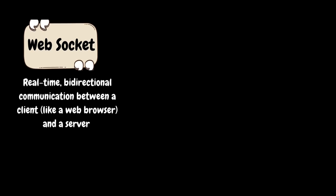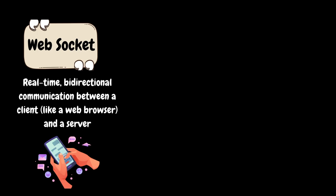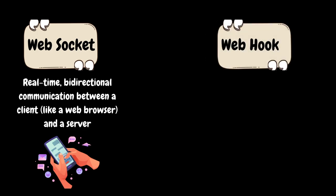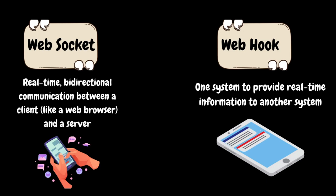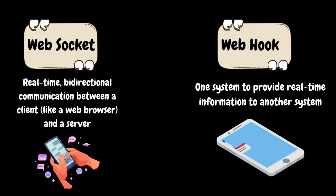Next is WebSocket, a communication protocol that enables real-time bi-directional communication between a client like a web browser and a server over a single long-lived connection. Unlike traditional HTTP, which involves separate requests and responses, WebSocket allows data to be sent and received by both the client and server at any time. Imagine chatting with a friend in real-time — in traditional HTTP, you send a message and your friend receives it when they refresh the page. WebSocket is like instantly exchanging messages without refreshing, creating a smooth continuous conversation. Finally, we have webhooks — a way for one system to provide real-time information to another system, allowing automated notifications or data updates to be sent from one application to another whenever a specific event occurs, without the need for continuous polling.